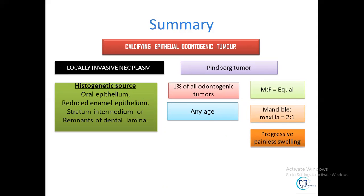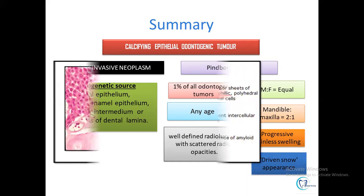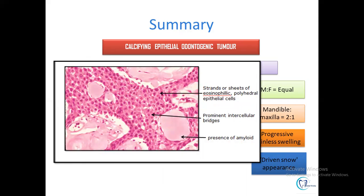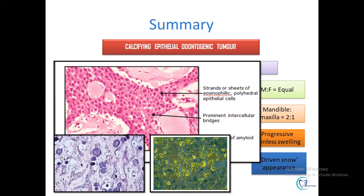Clinically it presents as a progressive painless swelling. Radiographically it appears as a well-defined unilocular radiolucency, sometimes associated with scattered radiopacity giving the 'driven snow' appearance. Histopathologically: presence of polyhedral epithelial cells connected by prominent intercellular bridges, presence of amyloid, presence of Liesegang rings, and apple-green birefringence under polarizing microscope confirming amyloid.